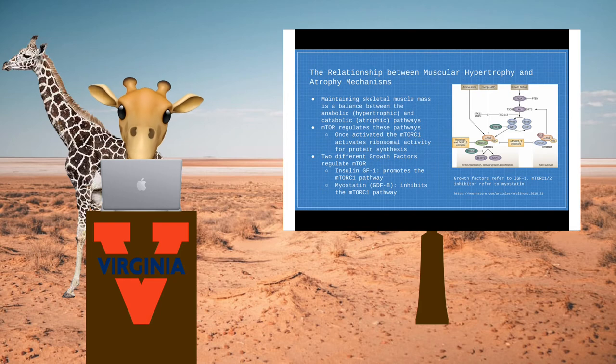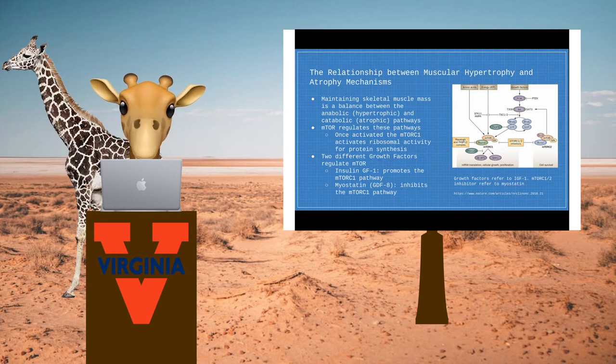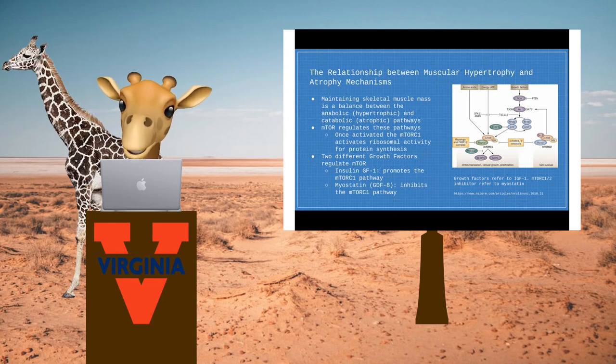Maintaining skeletal muscle mass is done by regulating the balance between anabolic and catabolic processes. mTOR, or the mammalian target for rapamycin, controls these signaling pathways and is vital for muscle hypertrophy. But what regulates mTOR?